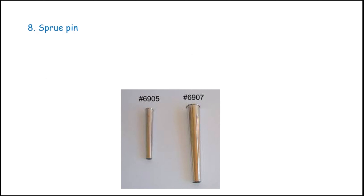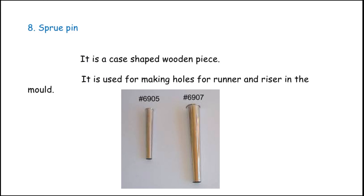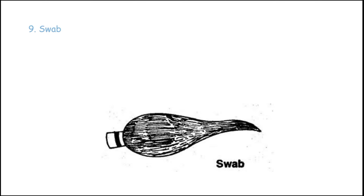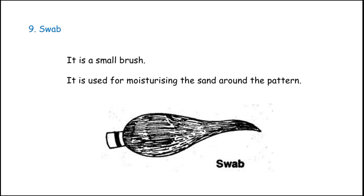The next one is the sprue pin. It is a cone-shaped wooden piece used for making holes for the runner and riser in the mold. The next one is the swab — it is a small brush used for moisturizing the sand around the pattern.